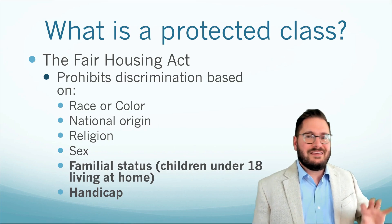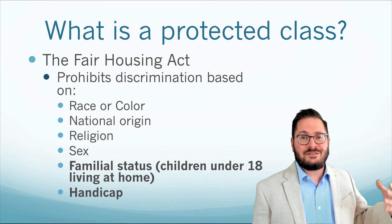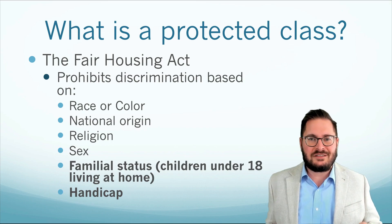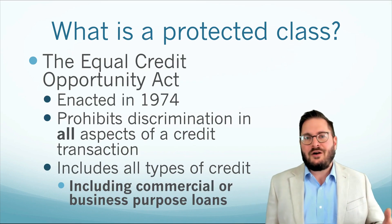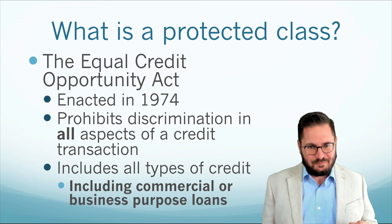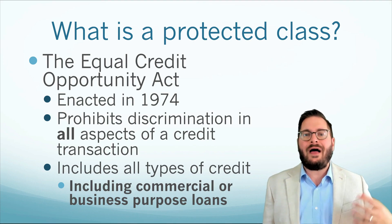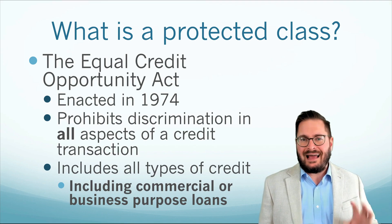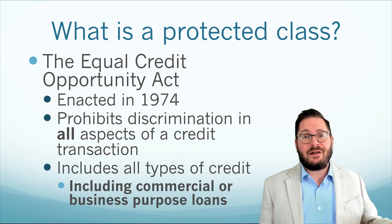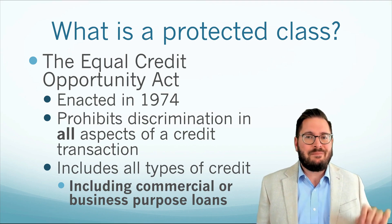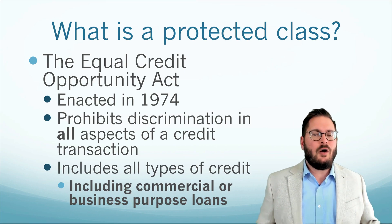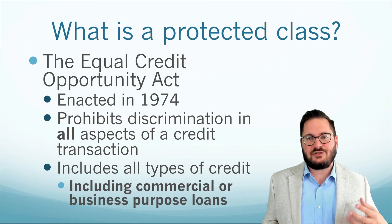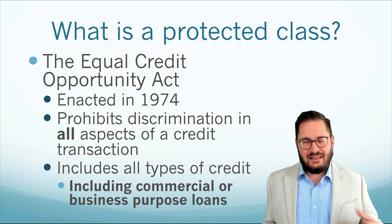When we get to the Equal Credit Opportunity Act, which relates to Regulation B, some of these are redundant — we'll take a look at those in just a second. ECOA was passed in the early 1970s and prohibits discrimination on all aspects of a credit transaction. It includes all types of credit, not just home loans like the Fair Housing Act, but also commercial and business purpose loans. ECOA is implemented by subpart A of Regulation B, which drives a lot of this and includes a list of protected classes.